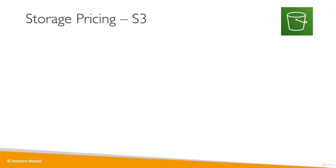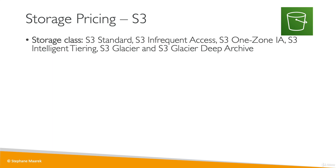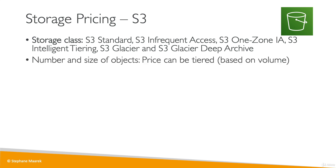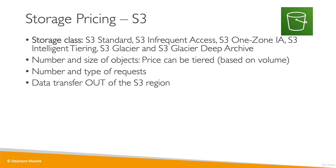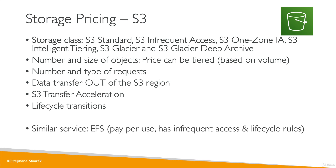For Amazon S3 storage pricing, there are different storage classes: S3 Standard, S3 Infrequent Access, S3 One Zone IA, S3 Intelligent Tiering, Glacier, and Glacier Deep Archive. You pay for the number and size of objects, with tiered pricing giving discounts for higher volumes. You also pay for requests in and out of S3, data transfer out of the S3 region (inbound is free), S3 Transfer Acceleration, and lifecycle transitions between storage classes. EFS similarly charges per use and has an Infrequent Access tier with lifecycle rules.